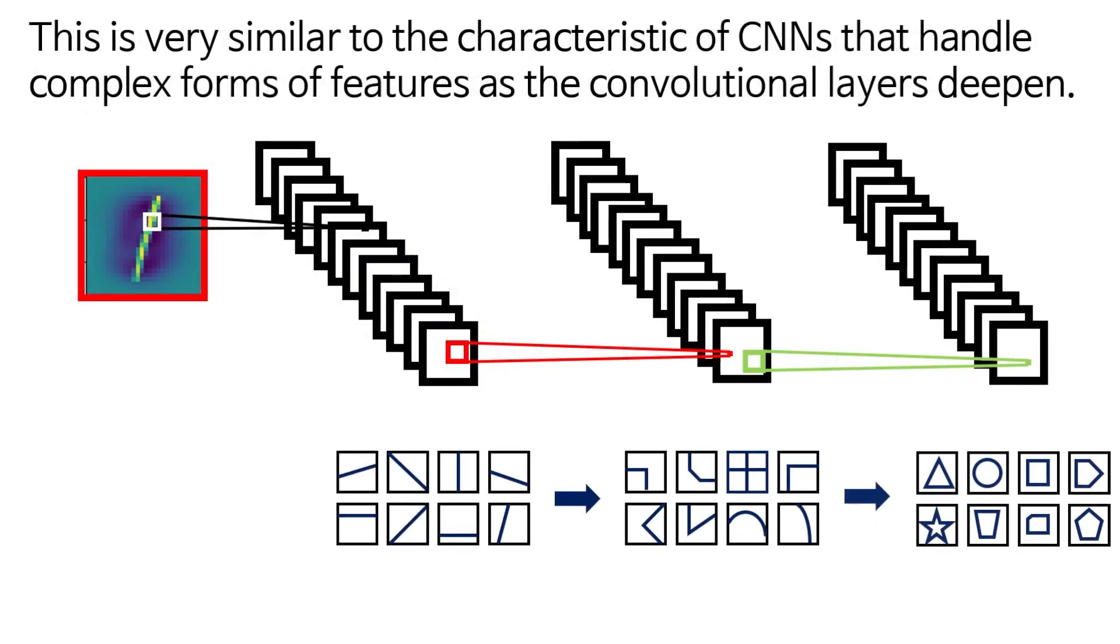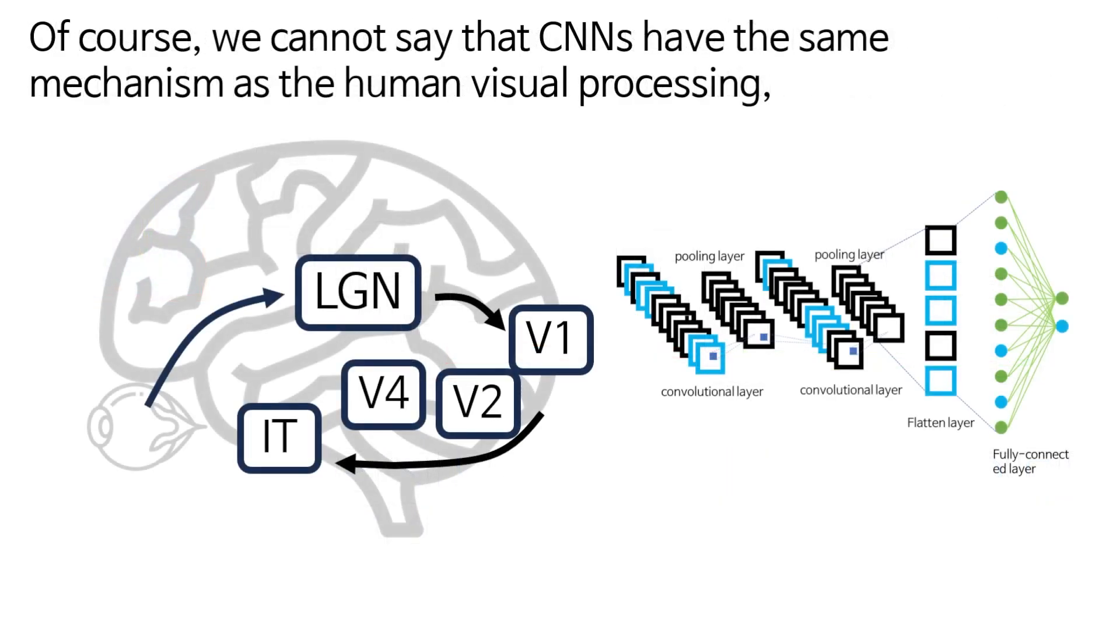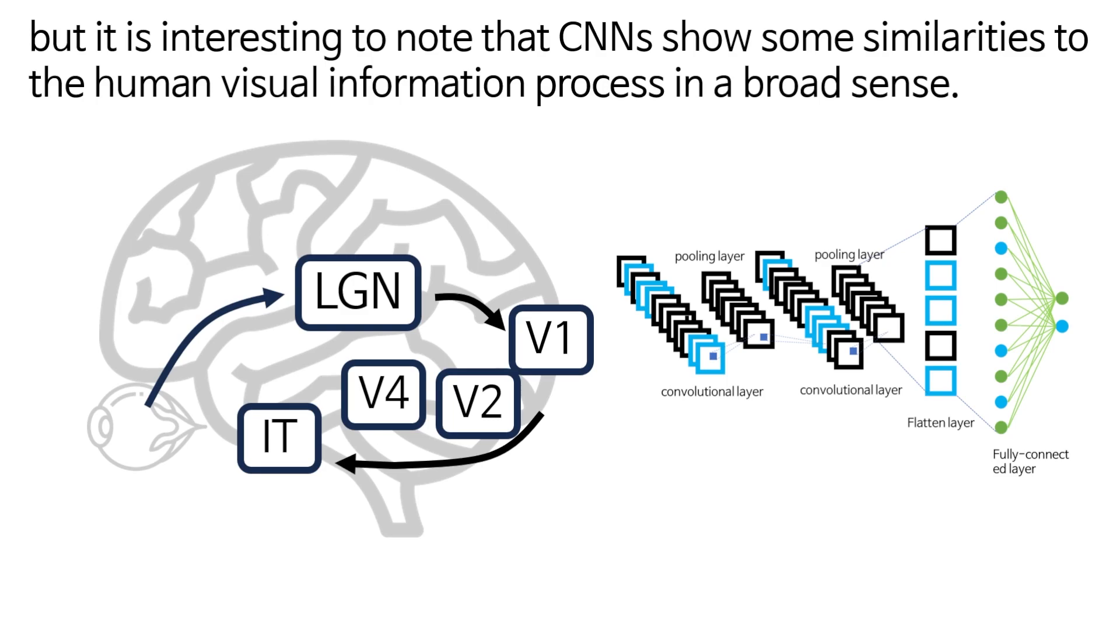This is very similar to the characteristics of CNNs that handle complex forms of features as the convolutional layers deepen. Of course, we cannot say that CNNs have the same mechanisms as human visual processing, but it is interesting to note that CNNs show some similarities to the human visual information process in a broad sense.